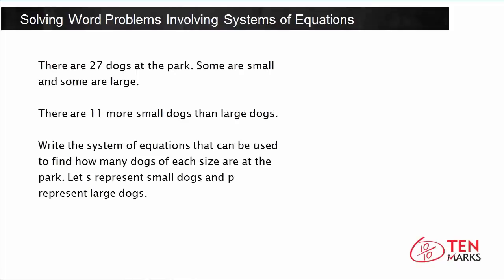Let's start with a problem. There are 27 dogs at the park. Some are small and some are large. There are 11 more small dogs than large dogs. Write the system of equations that can be used to find how many dogs of each size are at the park. Let s represent small dogs and p represent large dogs.